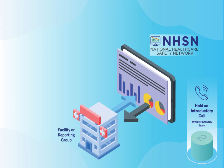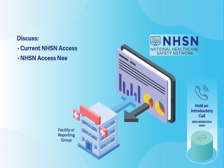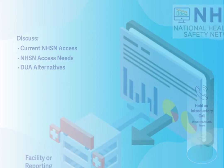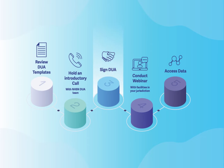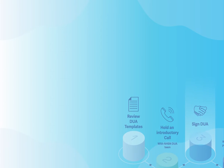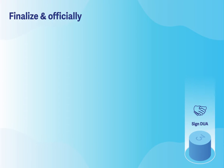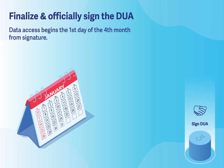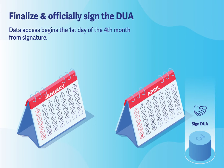During the call, we will discuss what NHSN access does your health department currently possess, what new access would your health department need, and finally, are there other options outside of a DUA that may be appropriate for your health department. After the introductory call, CDC will work with your health department to finalize the terms and officially sign the DUA. You can expect to gain access to NHSN data on the first day of the fourth month after CDC signs the DUA.